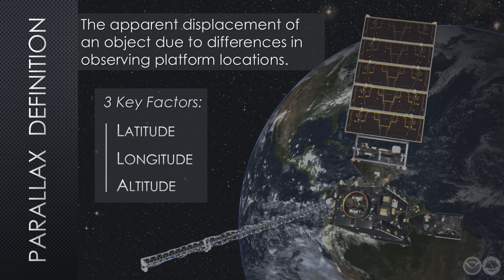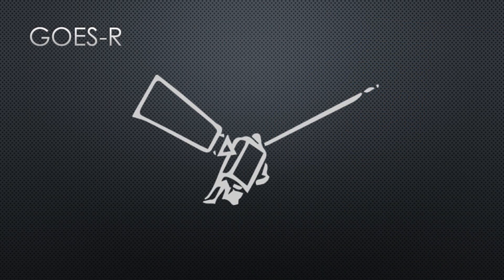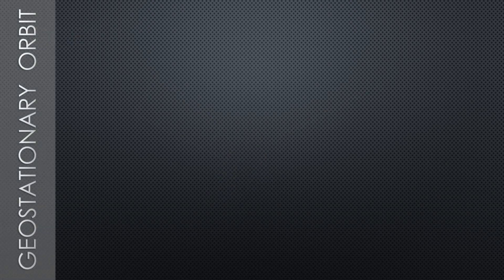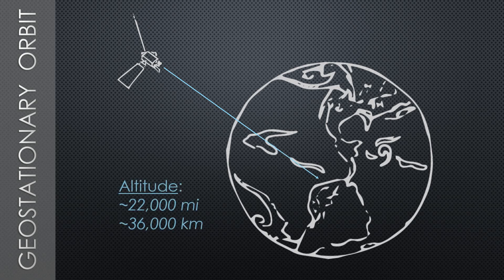To visualize how these factors translate into parallax displacement, let's consider a conceptual cartoon. This is a simplified illustration of a spacecraft in the GOES-R series. GOES-16, like any geostationary satellite, is positioned over the equator, orbiting at an altitude of roughly 22,000 miles, or 36,000 kilometers. Therefore, when the satellite detects objects located at mid-latitudes, it is viewing them at an angle, not from directly overhead.